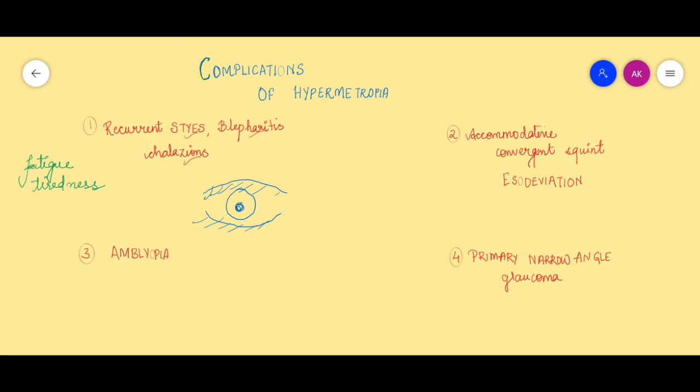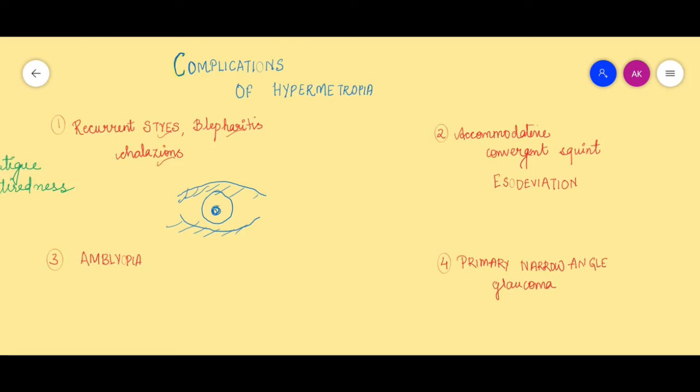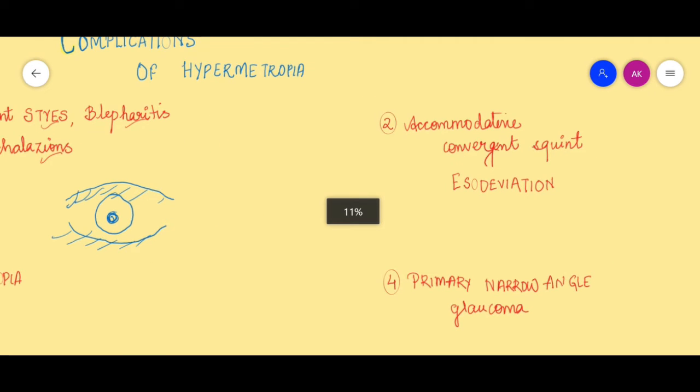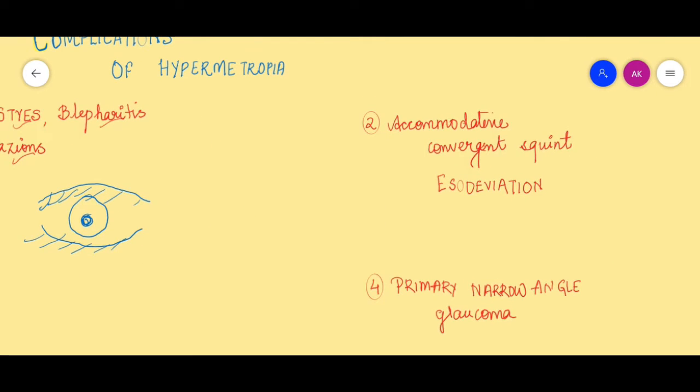Now the second important complication of uncorrected hypermetropia is esotropia, also called accommodative convergent squint. Let me explain to you why this happens.